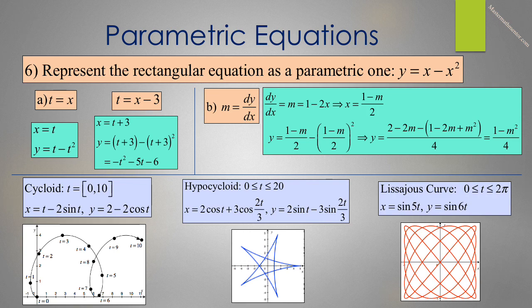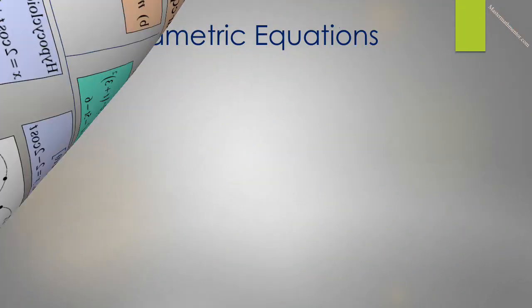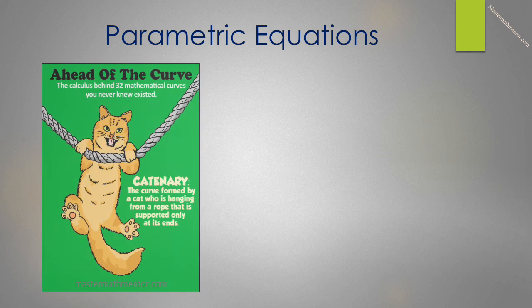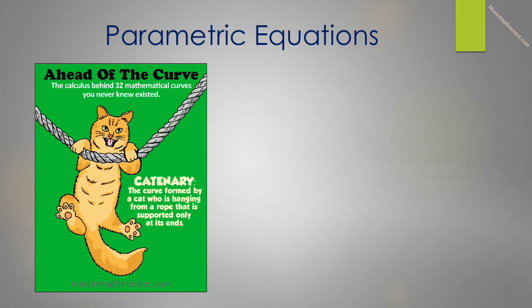Parametrics can create some beautiful graphs, but most of them have a real-life application. The Lissajous curve, which has t running from 0 to 2 pi, is used in the theory of harmonics. It is graphed with x equals sin of 5t, and y equals sin of 6t. If you have interest in some of these beautiful mathematical curves, you can check them out on Master Math Mentor's Ahead of the Curve. There's a study of 32 mathematical curves that can be created in rectangular form, parametric form, and later polar form. It is free on the Master Math Mentor website.